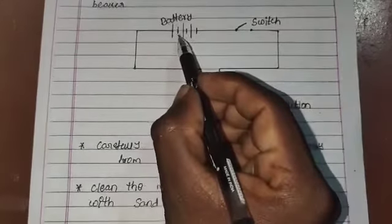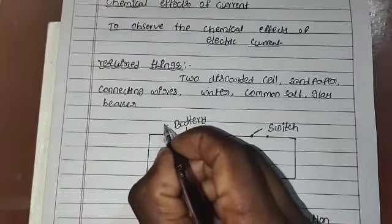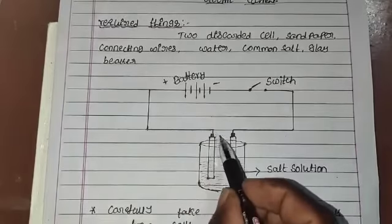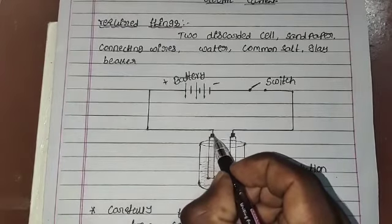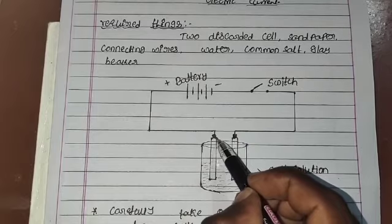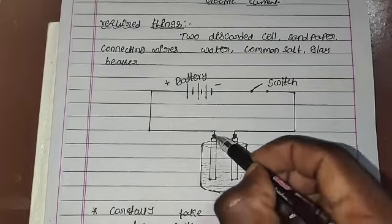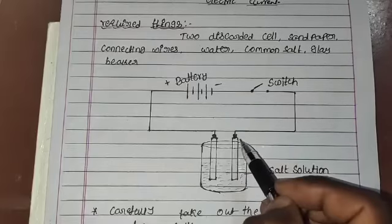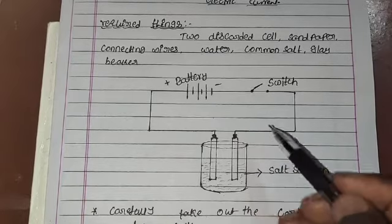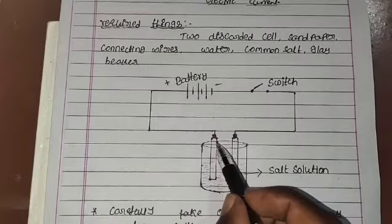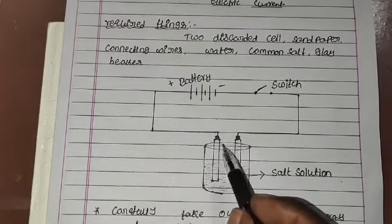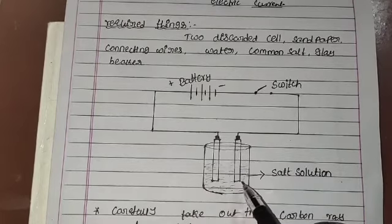After this, we have to connect the positive terminal of the battery to the metal cap of one carbon rod, and the negative terminal of the battery is connected to the metal cap of another carbon rod. Then we have to immerse these carbon rods in a salt solution. We take water in a beaker, add salt to it to make a salt solution, and immerse the carbon rods into it.